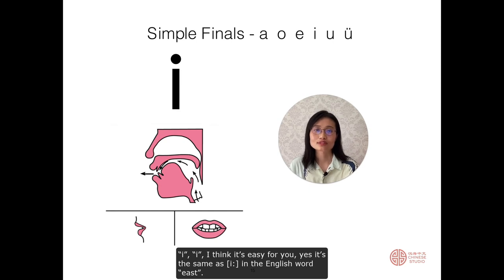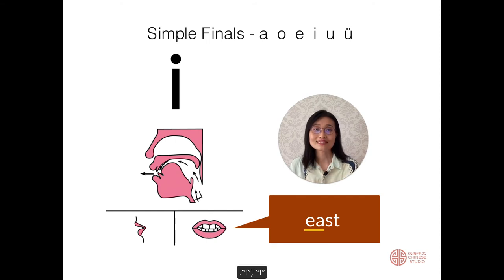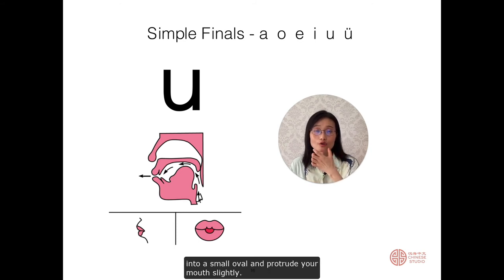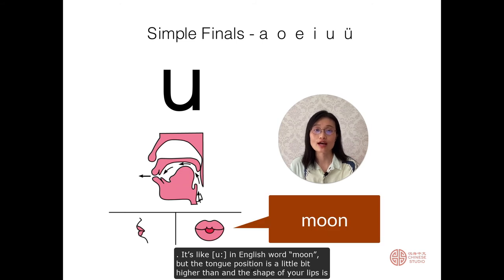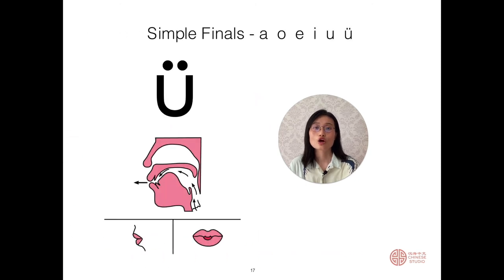I, ee. It's the same as 'ee' in the English word 'east'. Raise your tongue tip forward and touch the back of the lower front teeth, then stretch the tongue toward both sides. U, w. Contract your tongue towards the root, shape your lips into a small oval, and protrude your mouth slightly. It's like 'oo' in the English word 'moon', but the tongue position is a little bit higher and the shape of your lips is a small oval.